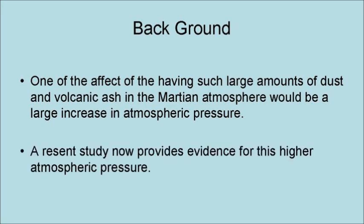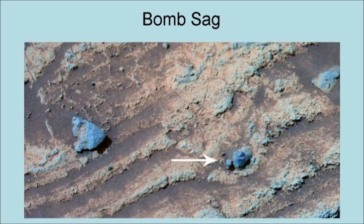A recent study now provides evidence for this higher atmospheric pressure. This was in the form of a study of dense rock layers called BOMSAG. They are caused by impacting volcanic rock, and this study has enabled the calculation of the velocity at which these rocks hit. These impact velocities provide information on the atmospheric pressure at the time of the impact.